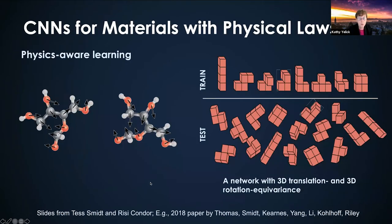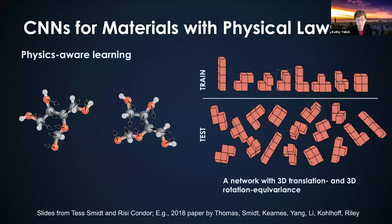Another issue that comes up in materials problems is understanding the physics constraints on the problem. For example, a molecular structure that's invariant over three-dimensional rotations — you can train a neural net using Tetris shapes in all their different orientations to basically train the neural net that these molecules should be invariant even if you're looking at a two-dimensional image of them. That's trying to build the physics into the models.